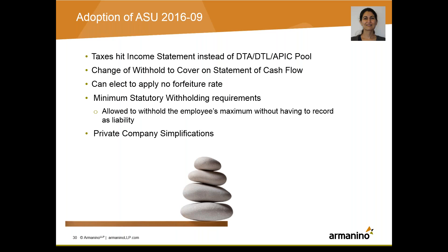ASU 2016-09: you don't have to worry about forfeiture rates anymore if you adopt this ASU. We've had quite a few clients choose to adopt it. There are several provisions within ASU 2016-09 — particularly around taxes, withhold-to-cover, and presenting stock-based compensation. The key provision is that you can elect to apply no forfeiture rate and instead just book forfeitures as they actually occur: you take a 0% forfeiture rate, book your expense as calculated, and when someone terminates you apply the reversal of unvested expense. We definitely recommend this as something to look into if you haven't already.